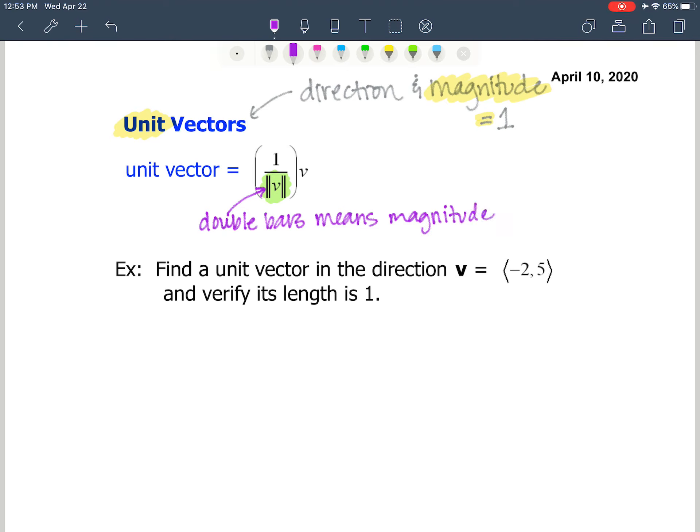And when you have 1 over a number, that means you're dividing by that number. 1 divided by the magnitude. You're dividing out the magnitude from the vector V. So this is your vector. Let's show you how this is done.